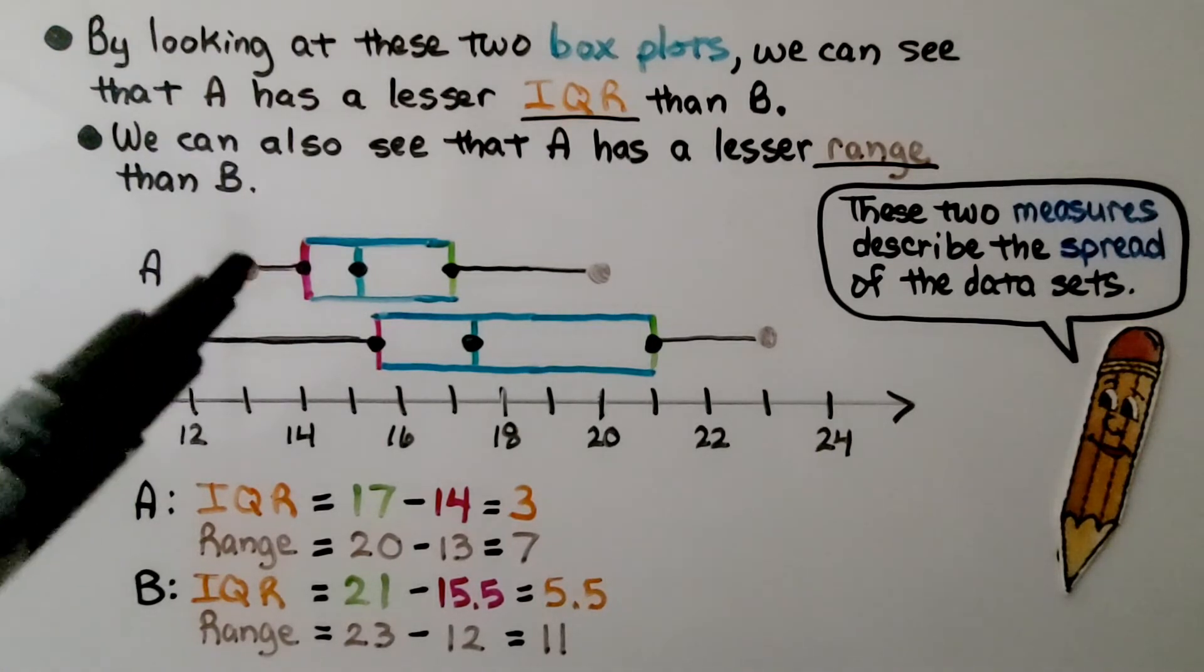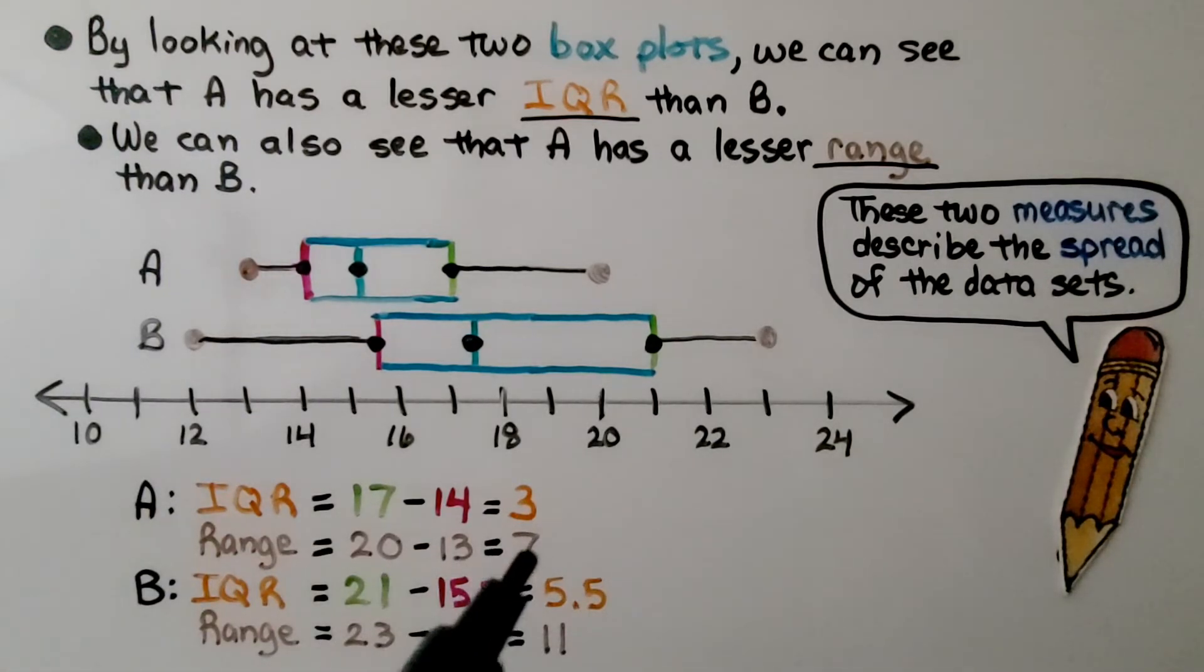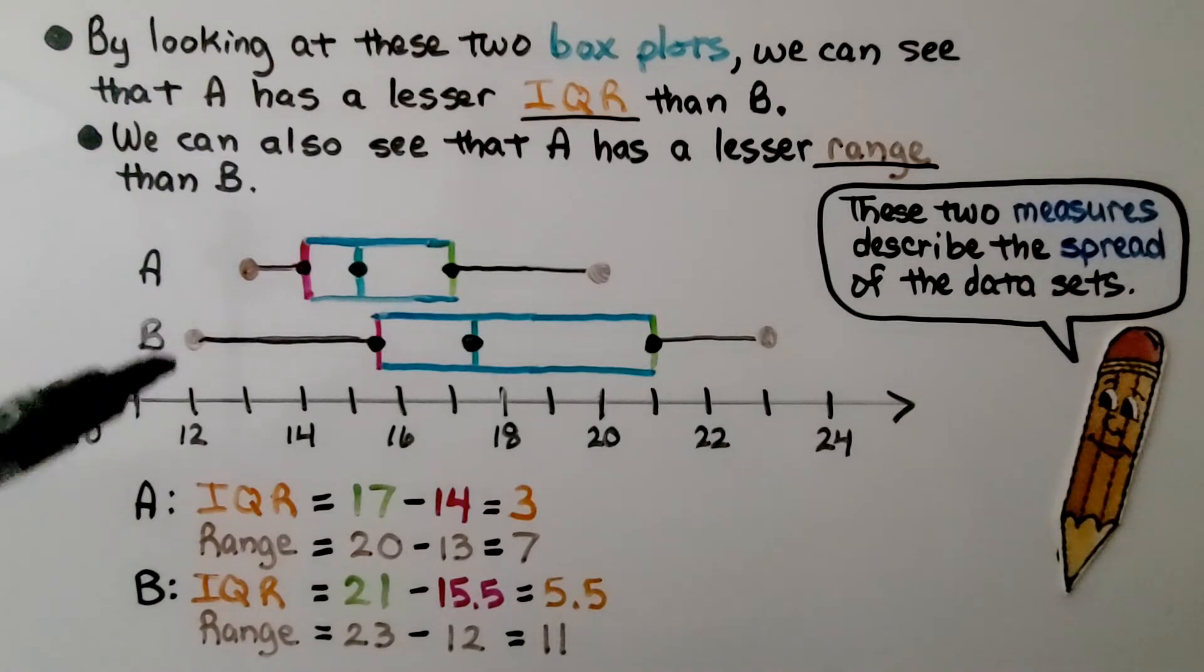The range for A goes from 13 to 20, so that range is 7. And for B, the range goes from 12 to 23, that's a range of 11. These two measures, the IQR and the range, describe the spread of the data sets.